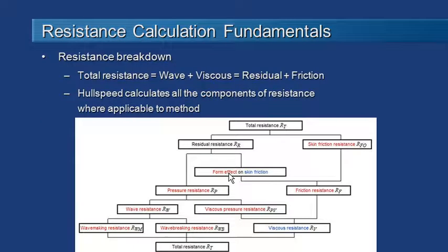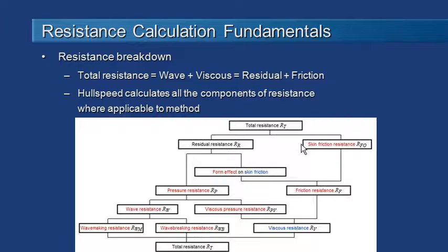Let's step back and recall some fundamentals of resistance calculation. Our resistance can be broken down into a couple of components: wave and viscous components, or alternatively residual and friction components. Starting from total resistance, we can break that down into residual resistance, which is based on the shape of the vessel and the pressure field around it, and skin friction resistance, which is due to the friction of the fluid flowing over the hull surface area.